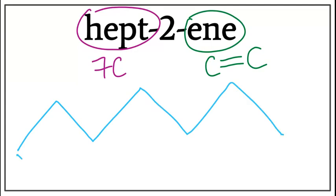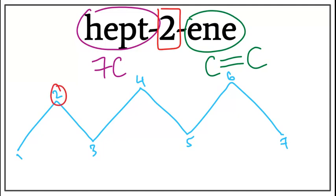Now let's number them: first carbon, second carbon, fourth carbon, fifth, sixth, and the seventh carbon. We know that there is a double bond, and this 2 tells us the location of the double bond — it starts at the second carbon, and is between the second and the third carbon.